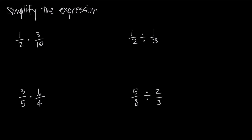When we're multiplying fractions, it's actually a lot easier than even adding and subtracting fractions, because all we do is multiply our numerators together to get our new numerator, and we multiply our denominators together to get our new denominator. So we say 1 times 3 is 3 — we get our new numerator — and 2 times 10 is 20, we get our new denominator.